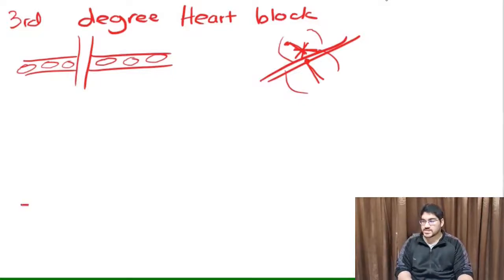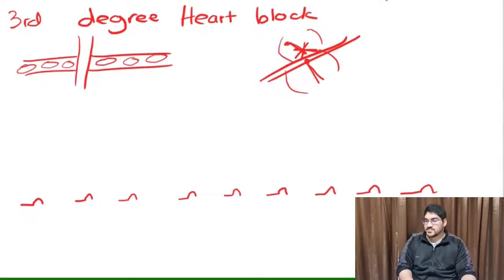And what happens when the SA node keeps firing? You get P waves. The SA node is firing on its own schedule, giving you P waves, regularly giving you P waves. Now in that time, the P waves are not getting through. So the SA node keeps firing. But now the AV node says, okay, I still got to release impulses for the ventricles. So it releases QRS complexes, also at regular schedules.